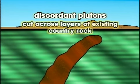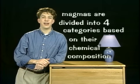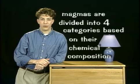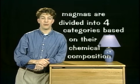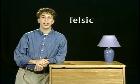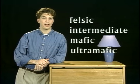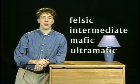Discordant plutons cut across the layers of existing country rock. Magmas are divided into four categories based on their chemical composition: felsic, intermediate, mafic, and ultramafic. Each type of magma yields different types of igneous rocks.